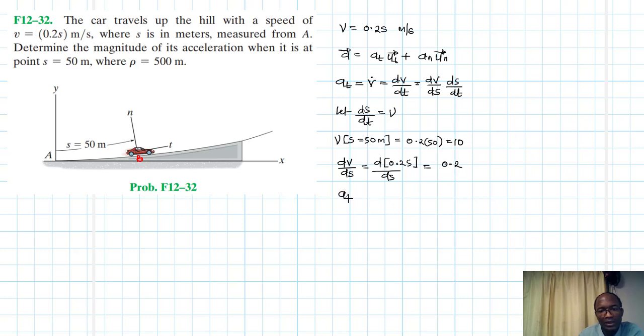So therefore, our at is just going to be equal to dv/ds times v, right? Which is equal to 0.2 times 10. Therefore our at is just equal to 2 meters per second squared. Therefore abt is equal to at, which is equal to 2 meters per second squared.